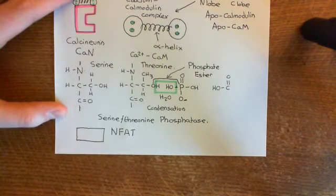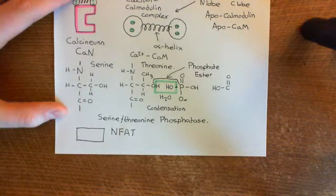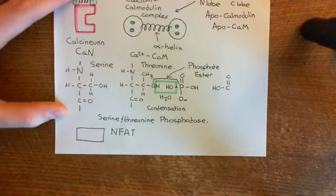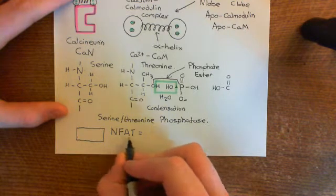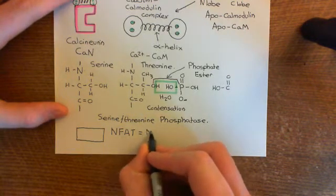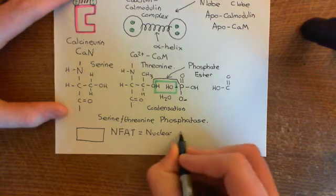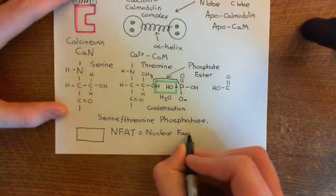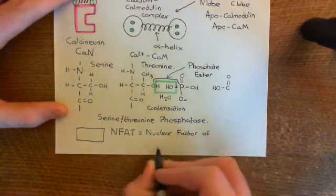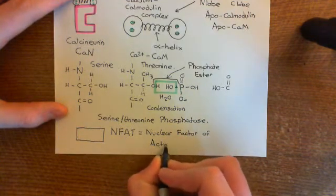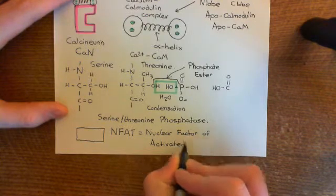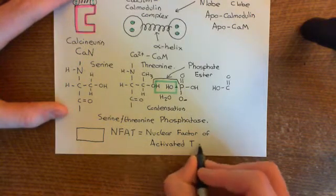It's stuck in the cytoplasm because it's got phosphate groups stuck all over it. This transcription factor is known as NFAT, which stands for the Nuclear Factor of Activated T Cells. Clearly it was named because it's going to be active in activated T cells — that's where it was first discovered.